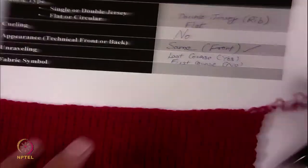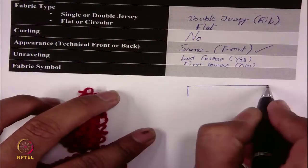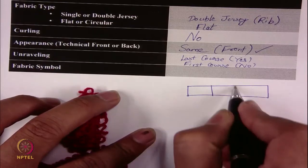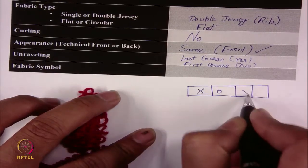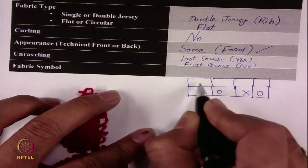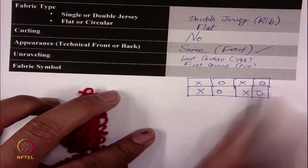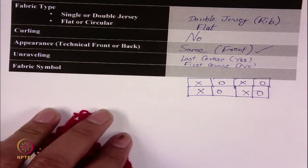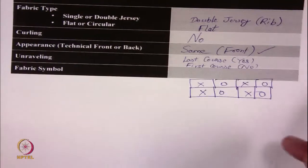Fabric symbol: the symbol of the fabric is again you can make boxes — cross 0 cross 0 — and the same course is repeating. So this is the fabric symbol. This is how the fabric's basic information is given.